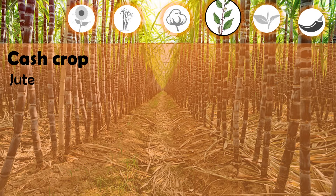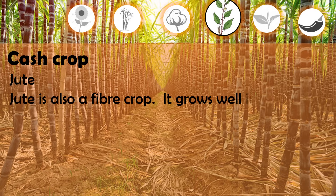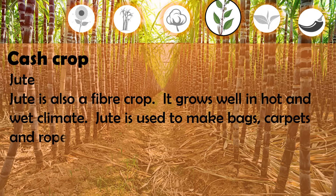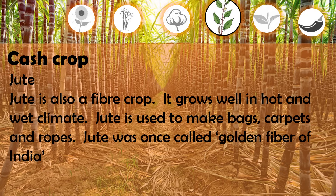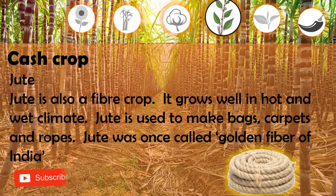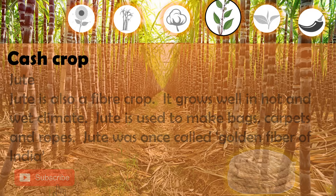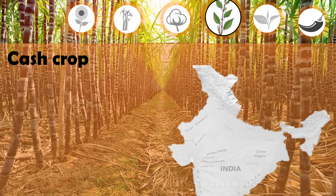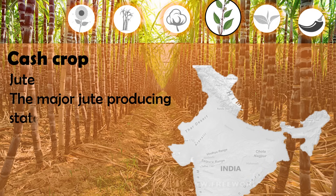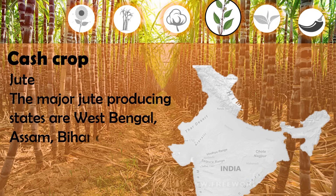Jute is also a fiber crop. It grows well in a hot and wet climate. Jute is used to make bags, carpets, and ropes. Jute was once called the golden fiber of India. The major jute producing states are West Bengal, Assam, Bihar, and Odisha.